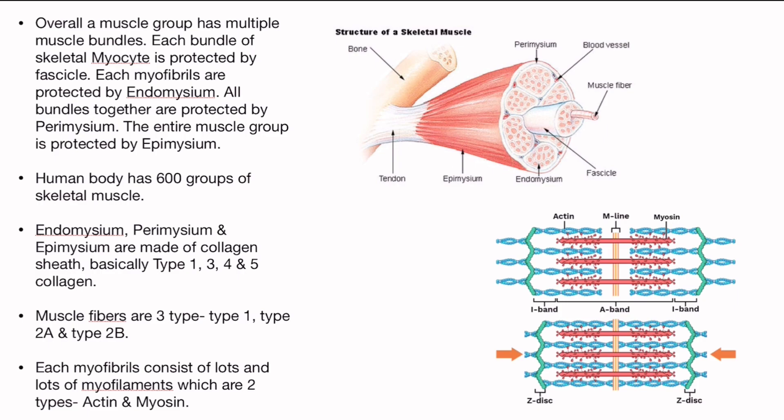Endomysium, perimysium, and epimysium are made of collagen sheaths — basically type 1, type 3, type 4, and type 5 collagen. Muscle fibers are also three types: type 1, type 2a, and type 2b — all these things we'll talk about later. Each myofibril consists of lots and lots of myofilaments, which are actually two types: actin and myosin. Actin and myosin we'll talk about later.